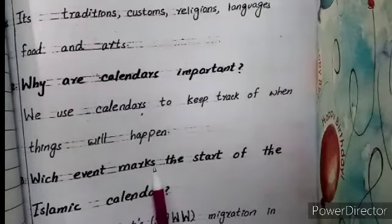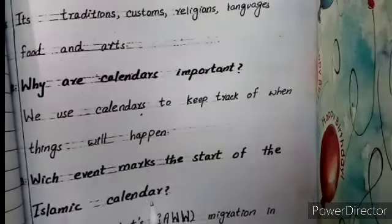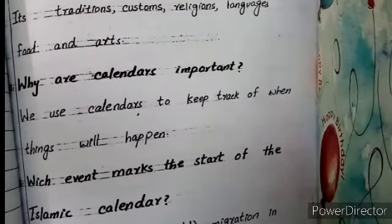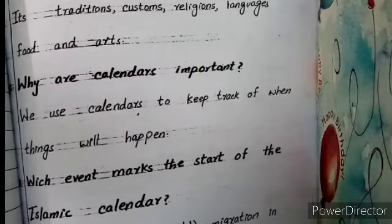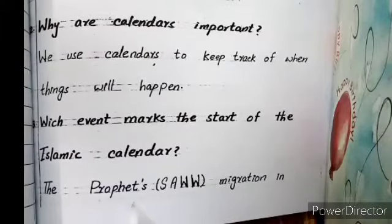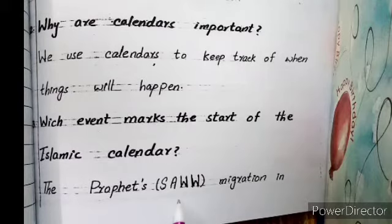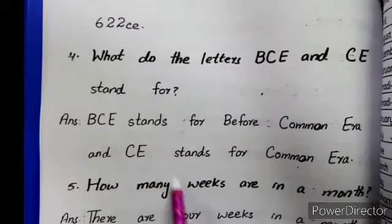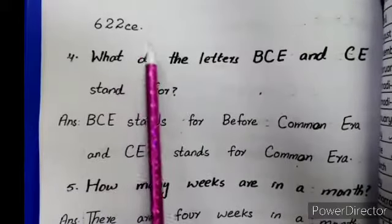Which event marks the start of the Islamic calendar? Its history is marked by the Prophet's migration in 622 CE. This migration, or Hijrat, marks the beginning of the Islamic calendar.